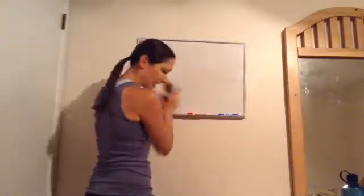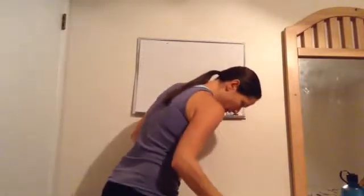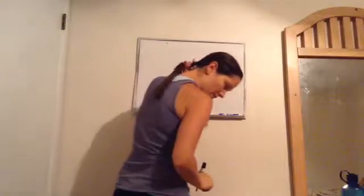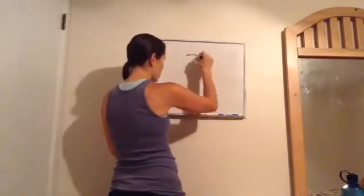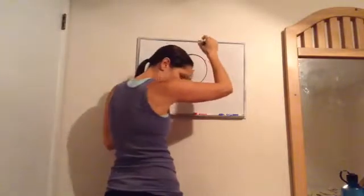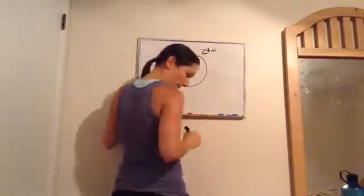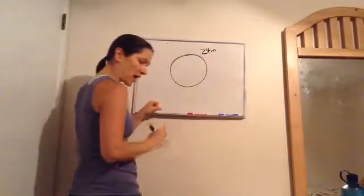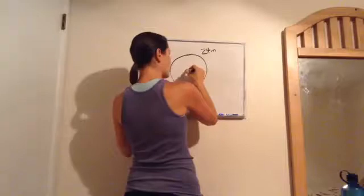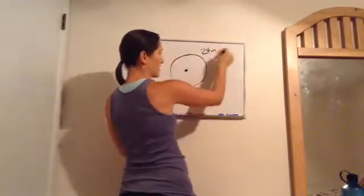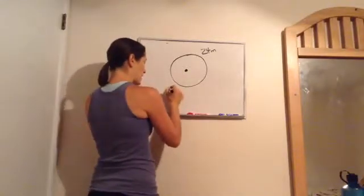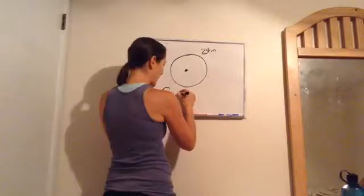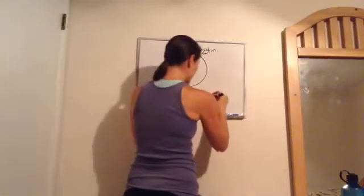Now let's do Example 3.3. It tells me the circumference around the circle is 24 meters, and they're asking me to find the radius of the circle. This one is a little different — they've given us the circumference and now we have to discover the radius.